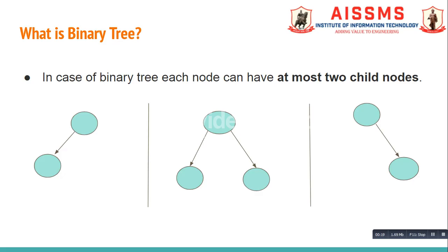In order to understand the concept of heap tree, first of all we need to know what is a binary tree. In a binary tree, each node can have at most two child nodes. A node may have only a left child node, only a right child node, both left and right child nodes, or sometimes no child nodes at all.